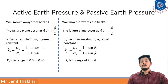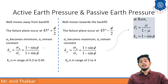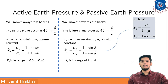For earth pressure at rest, P0 is the pressure at the original point. The coefficient of earth pressure at rest K0 = μ / (1 − μ), where μ is Poisson's ratio, and K0 = 1 − sin φ. You should remember all the coefficients as well as the angles of failure planes. We will learn new theories in the next video. Thank you.